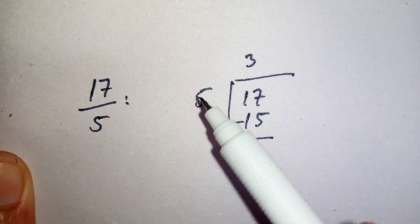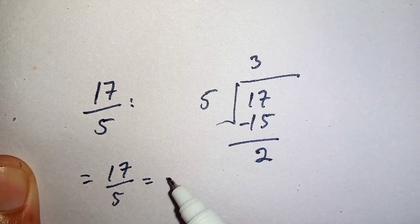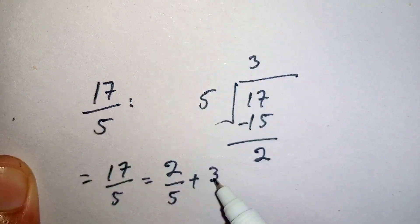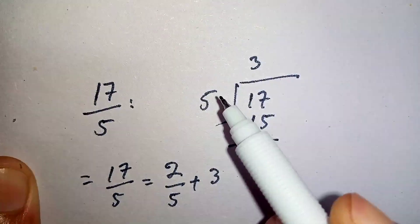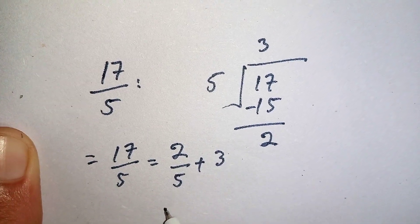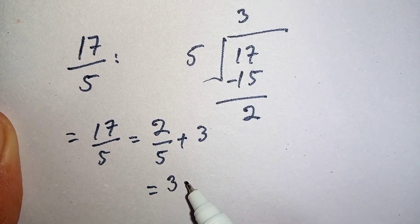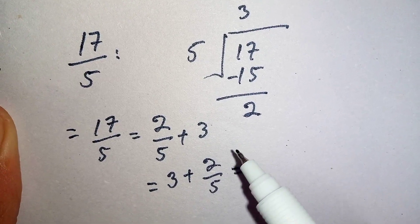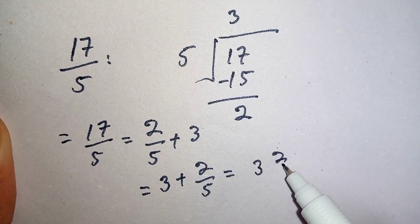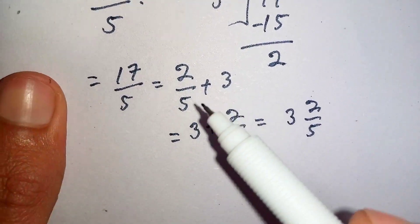To convert 17 over 5 into a mixed number, we will divide 2 by 5 and add with 3. So we write: 17 over 5 is equal to 2 divided by 5 plus 3. That gives us 3 plus 2 over 5, which we can write as 3 and 2 over 5.